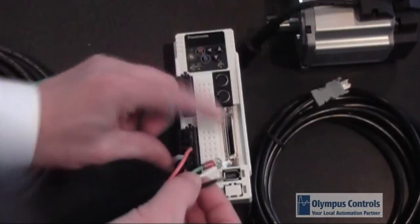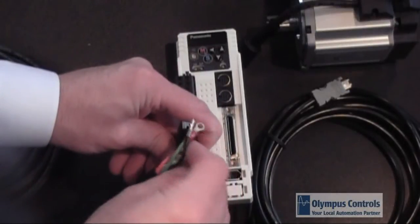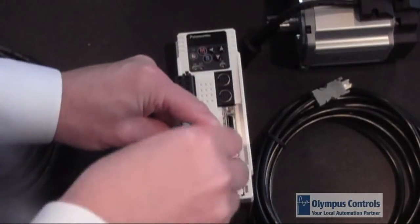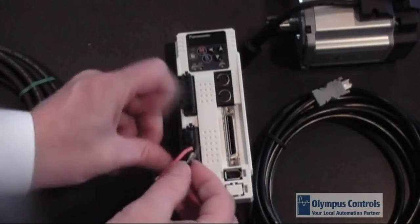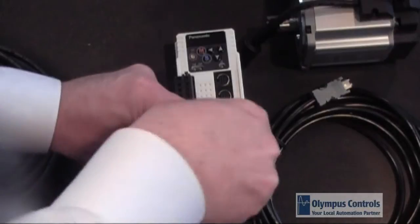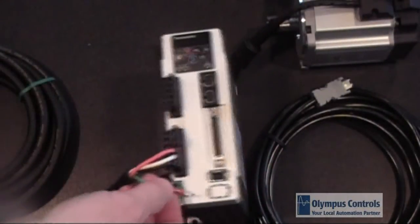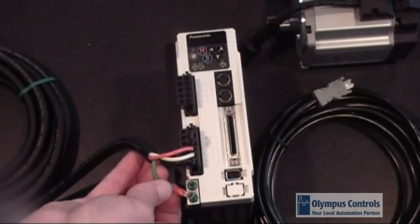Move to the next terminal. The phasing is red, white, and black from top to bottom. And then you would take the ground terminal and screw it into the screw terminal.